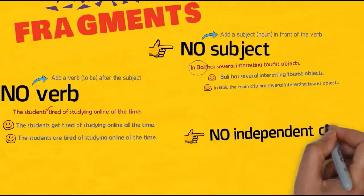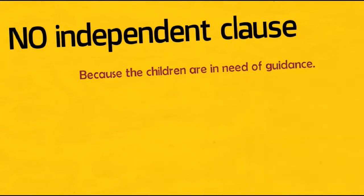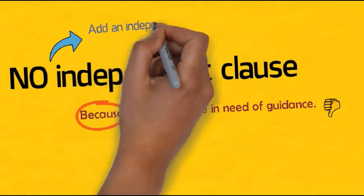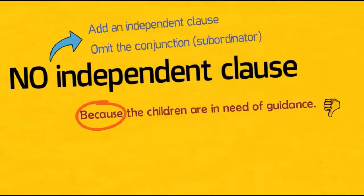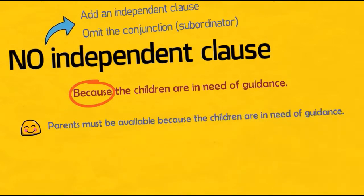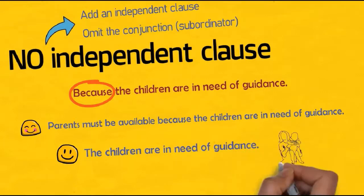The last type of fragment is missing the independent clause. This usually happens in a complex sentence that should consist of independent and dependent clauses. The problem occurs when a clause beginning with a conjunction stands by itself, missing a complete meaning. There are two ways to solve it: first, add the missing independent clause — for example, 'parents must be available' is added; second, remove the conjunction to make it a simple sentence, such as omitting 'because.'